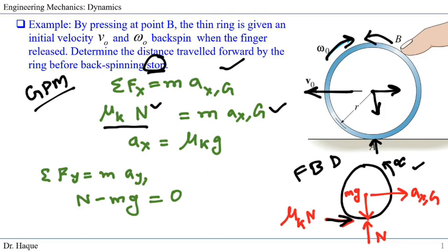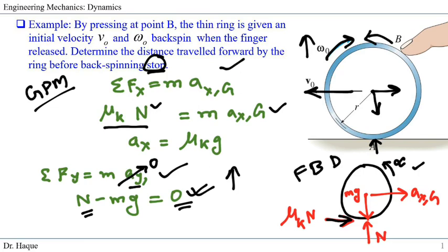When we take ΣFy, there is no acceleration in the y-direction, so that gives N = mg. Note: if a problem has acceleration in the y-direction, N might not equal mg. But here ay = 0, so N = mg. Substituting N = mg into our x-equation gives us the linear acceleration: aₓ = μk·g.